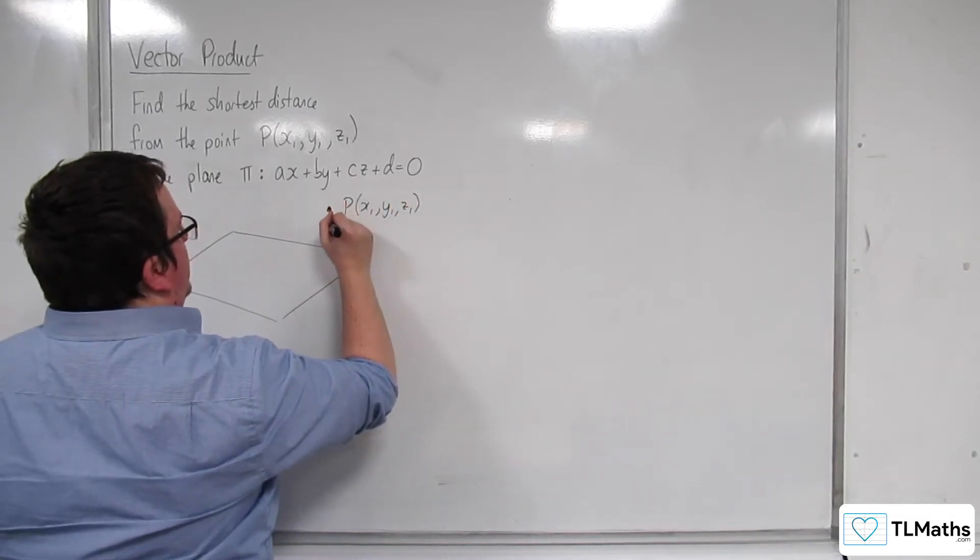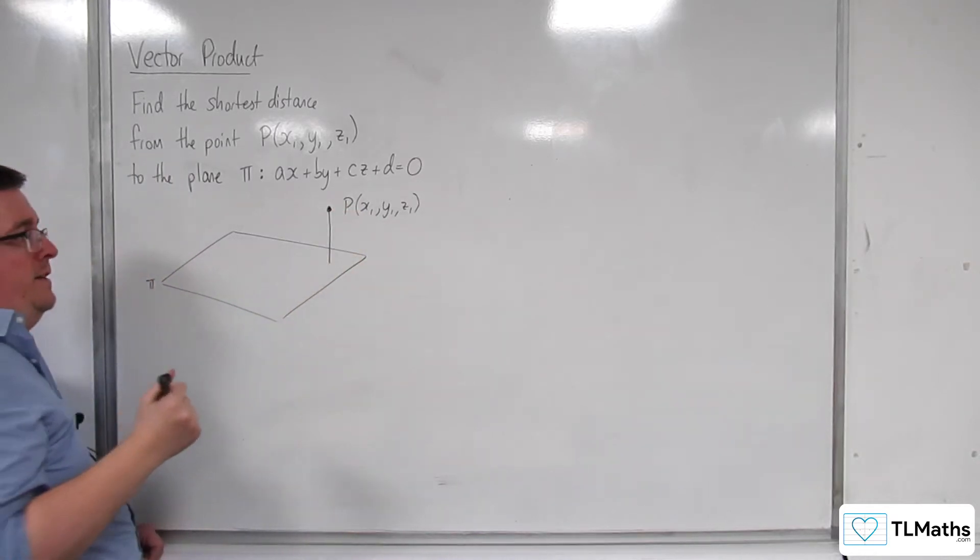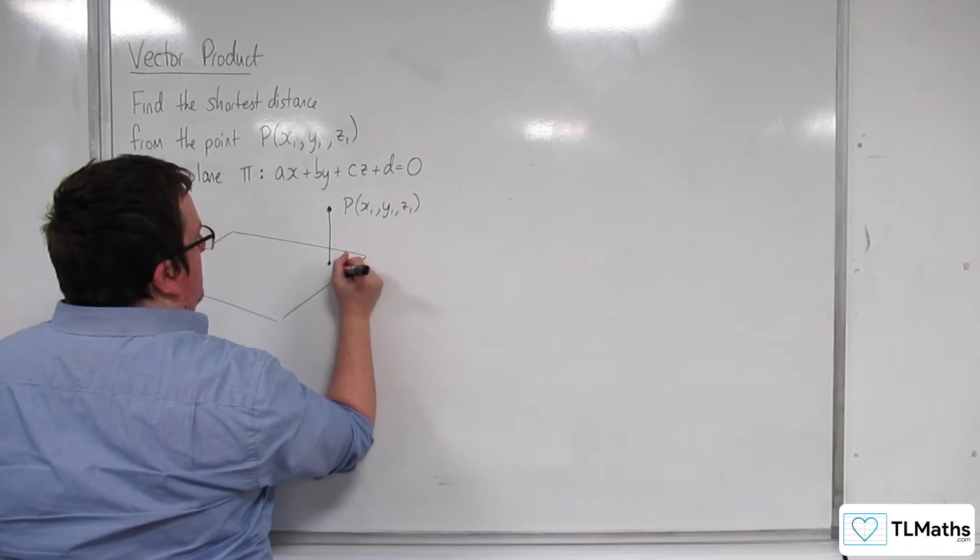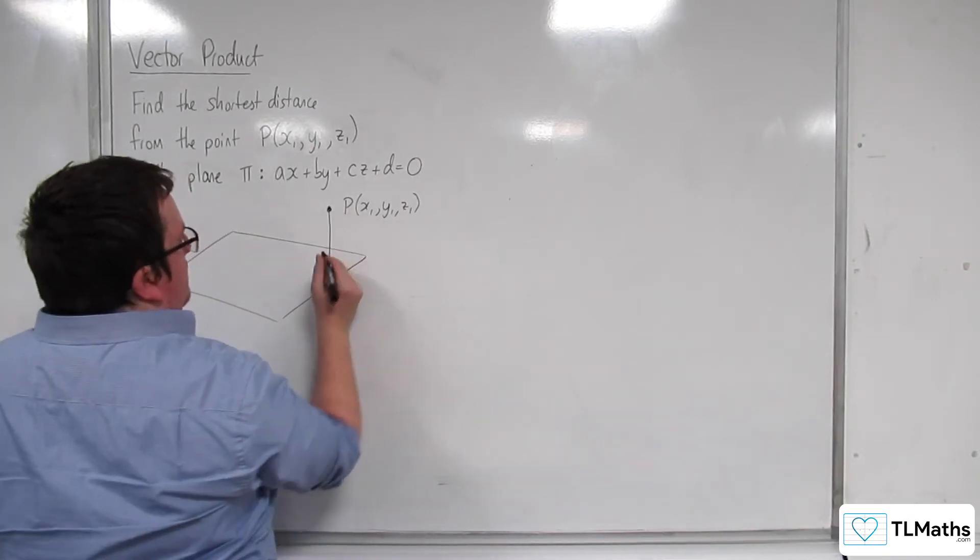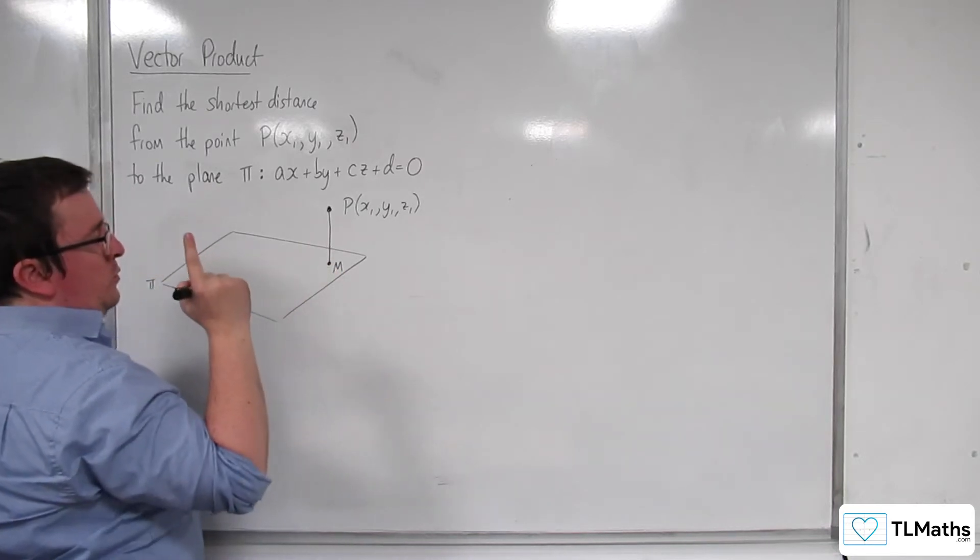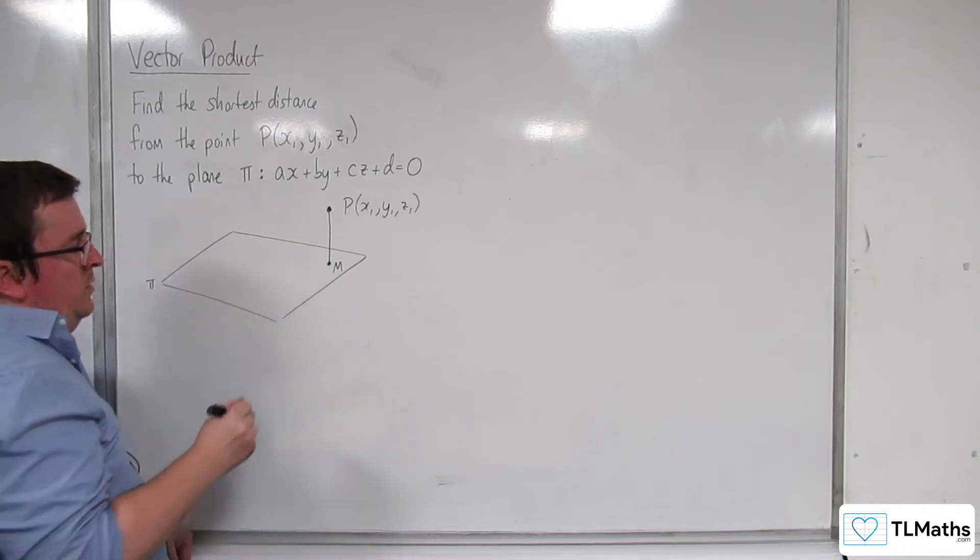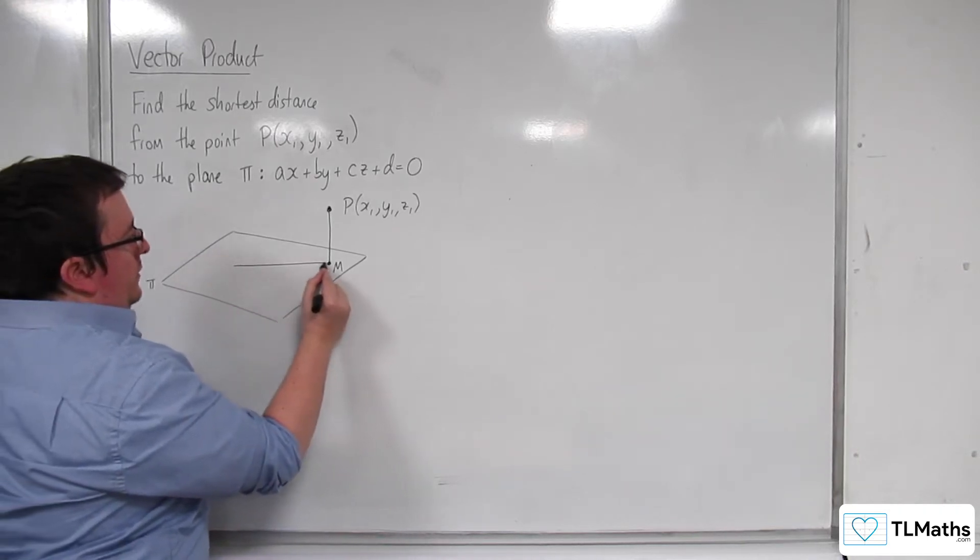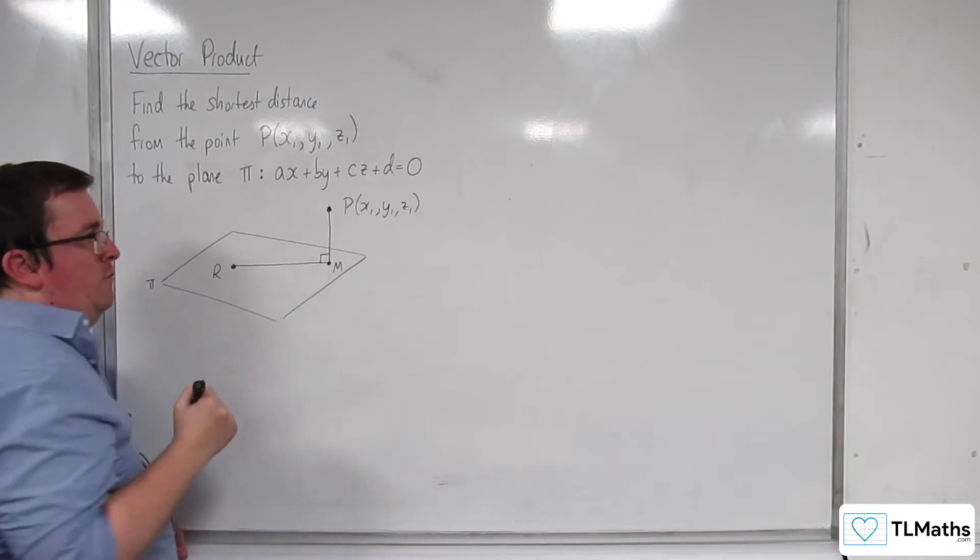And I'm going to draw a perpendicular down to the plane because that distance is what I want to find. I'm going to call this point M. Then I'm also going to find a point that's on the plane. Let's call that point R because that will be a right angle.